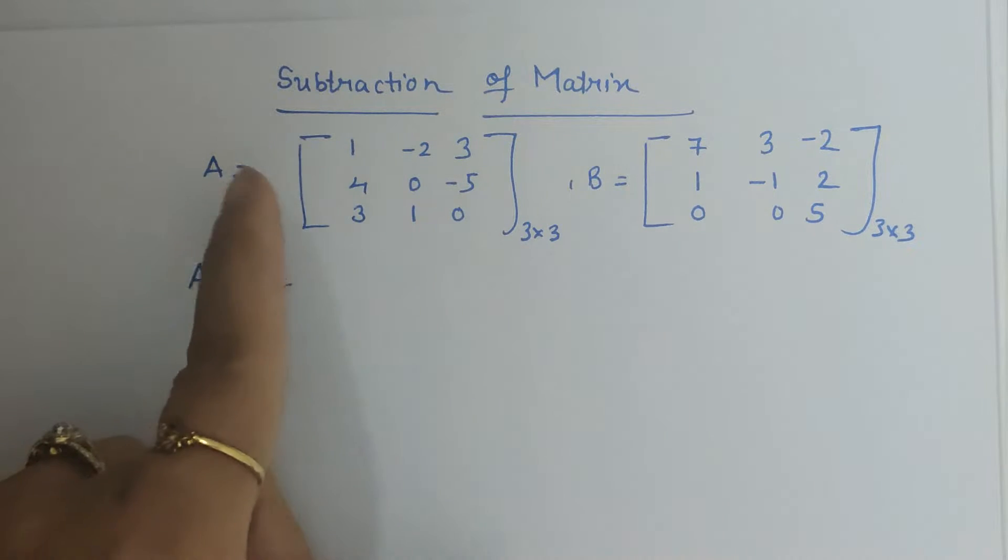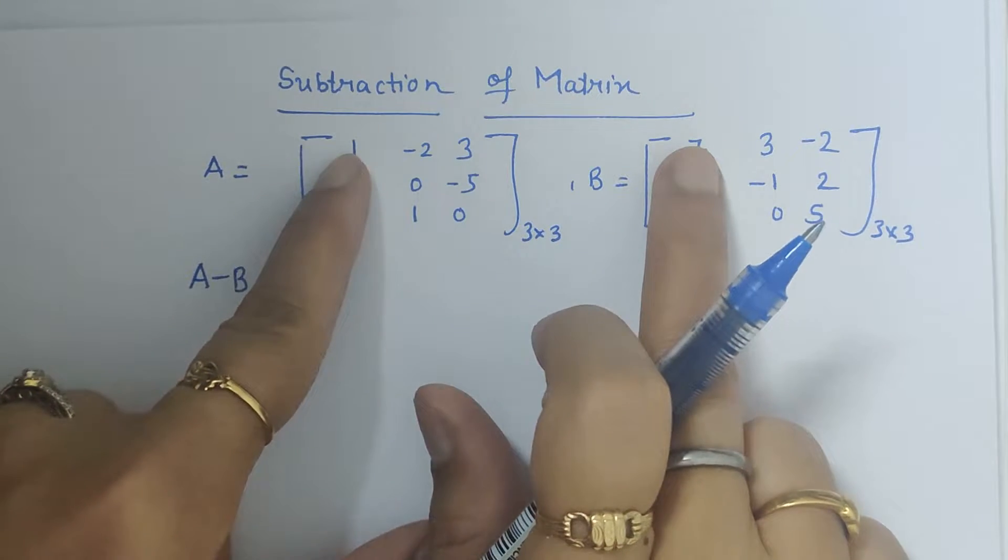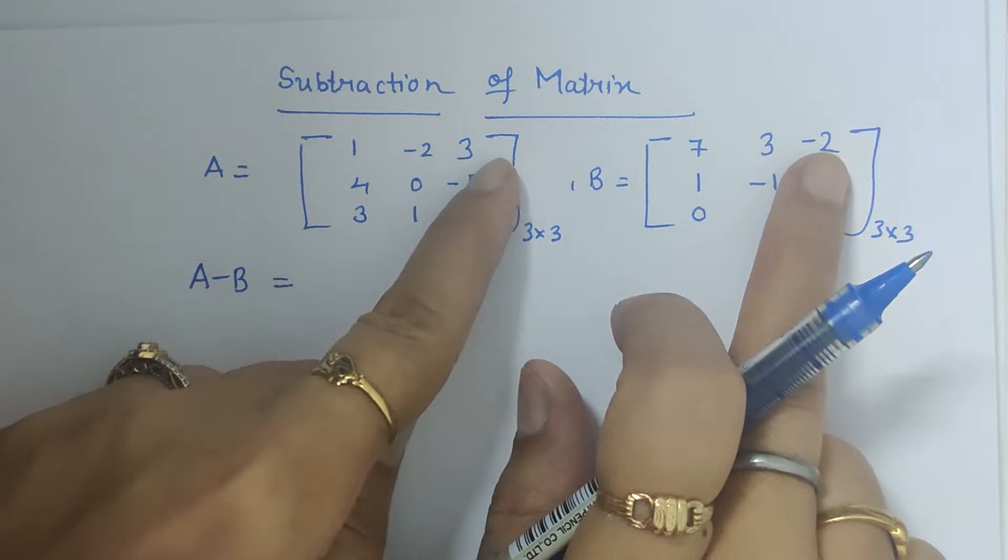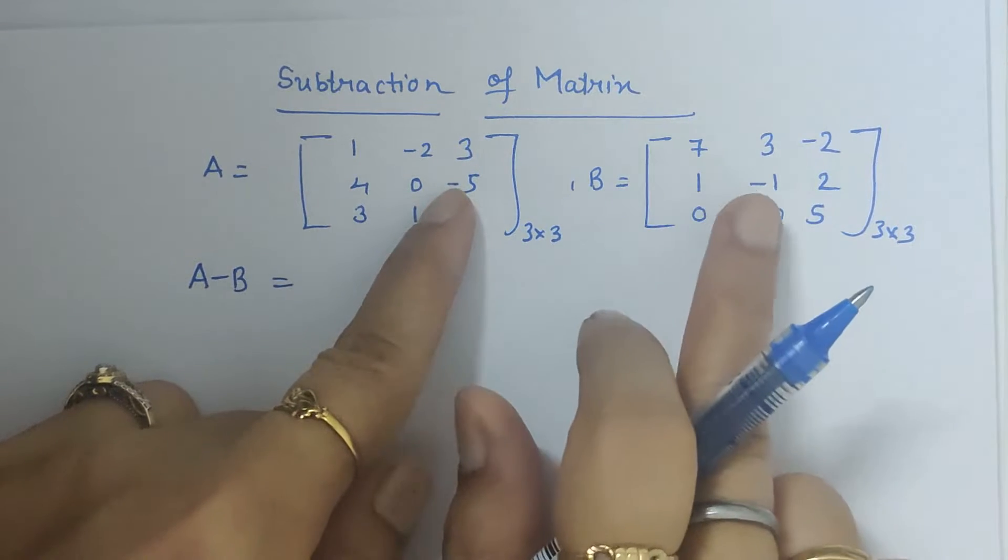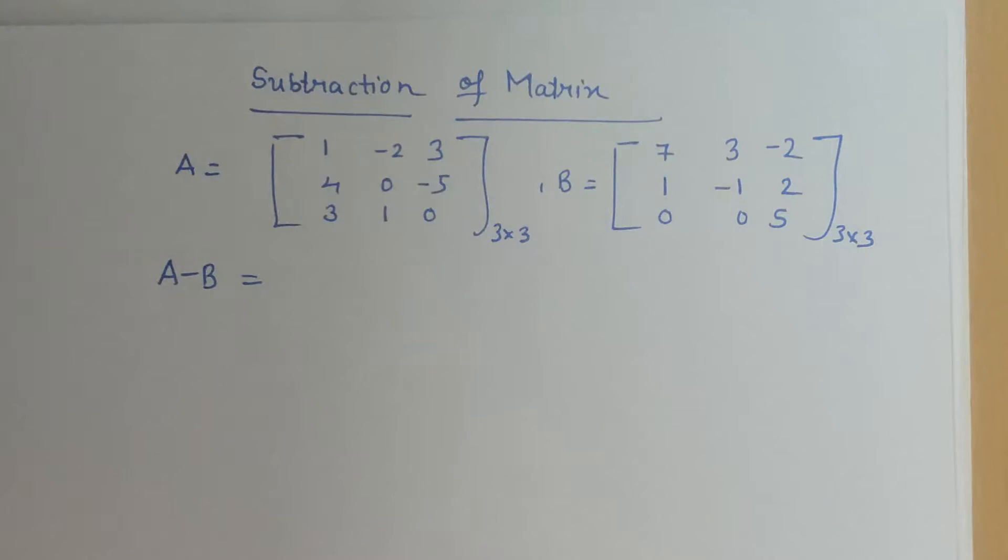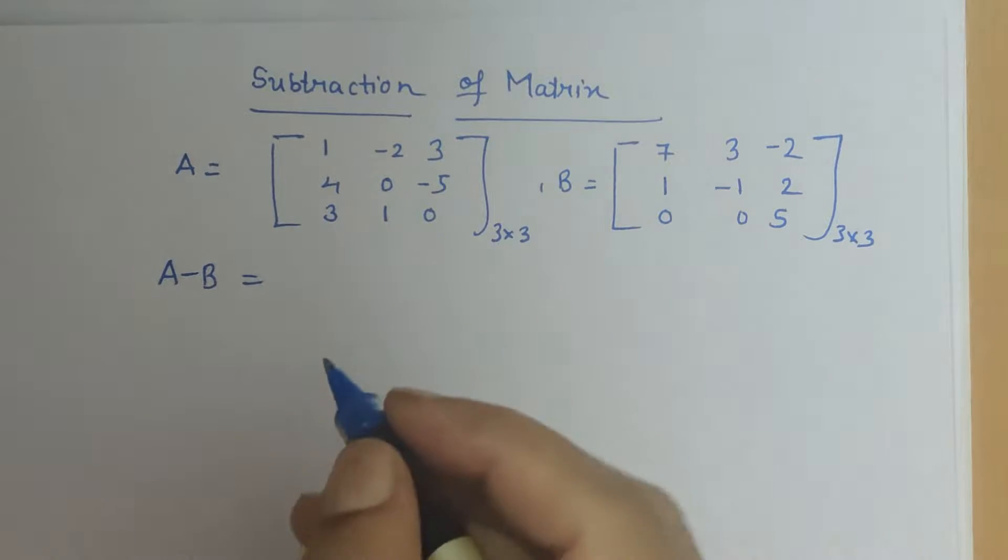So here we have to do A minus B that means 1 minus 7, minus 2 minus 3, 3 minus of minus 2, 4 minus 1, 0 minus of minus 1, minus 5 minus 2. So corresponding elements are to be subtracted. So here we will go in this way.